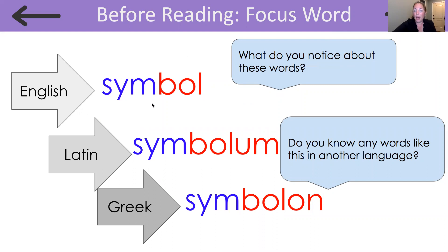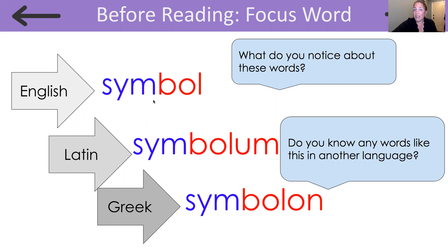What are you noticing about these words? You may have noticed, like me, that there are different languages. We have English, Latin, and Greek. Maybe you've also noticed that each of these words has the same beginning sounds, and they're all spelled the same: S-Y-M. That's because the word symbol comes from the Greek root S-Y-M, which means same. And we know from what we've read that a symbol is the same as, or represents, something else.